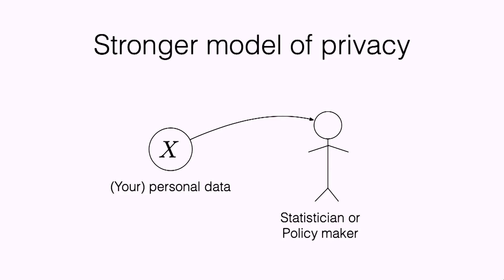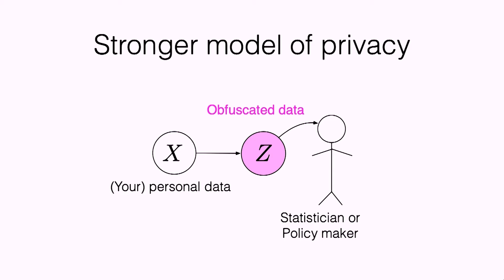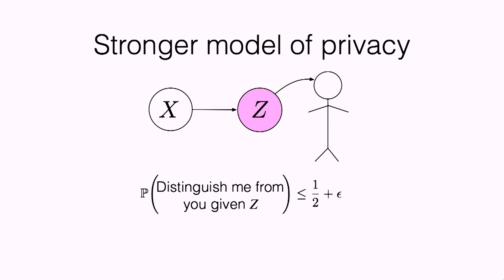A stronger model of privacy is the following: there's me — the statistician or machine learning person — and then there's you with your personal data. You don't know me from Adam, so you think maybe you shouldn't trust John with your data. So before you even share anything with me, you make it private — you obfuscate your data in some way. Once you do this, you feel safe because no matter what I do downstream, you've already guaranteed yourself privacy. The definition is roughly equivalent: if Erica or Yuri is giving me data, the probability I can distinguish them based on what they show me is very close to 50-50 — just random guessing.